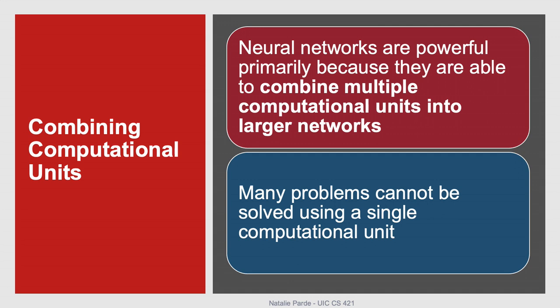The main reason why neural networks are so powerful is because they're able to take a bunch of computational units, like the ones we learned about so far, and combine them together so that they all work together to solve some greater task. This is useful because a lot of times, no matter how good our weights and activation function are, it's simply not possible to solve a problem using a single computational unit.